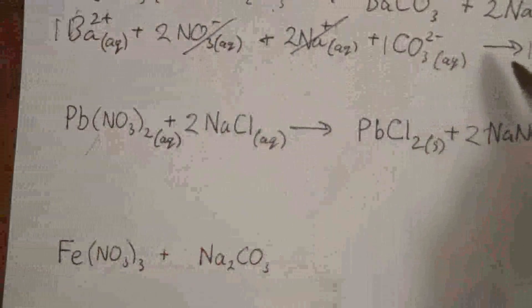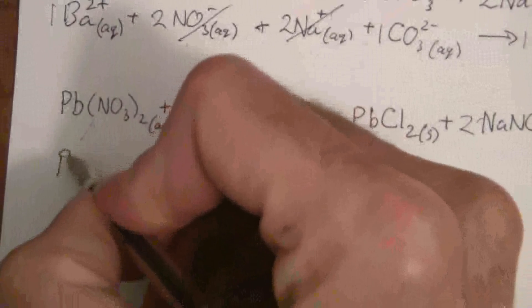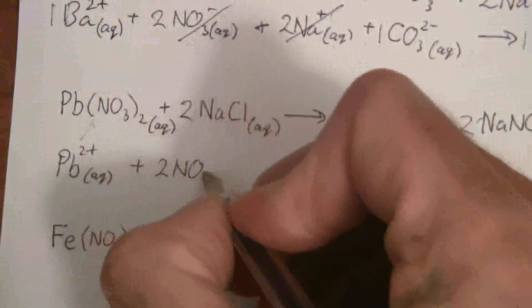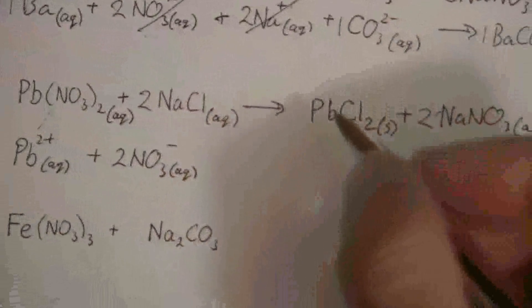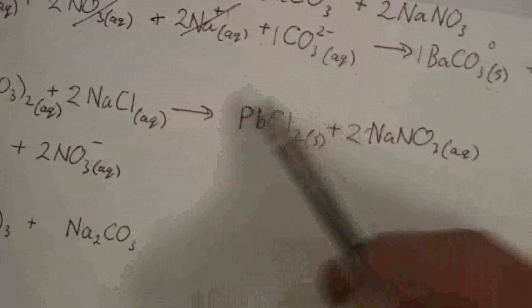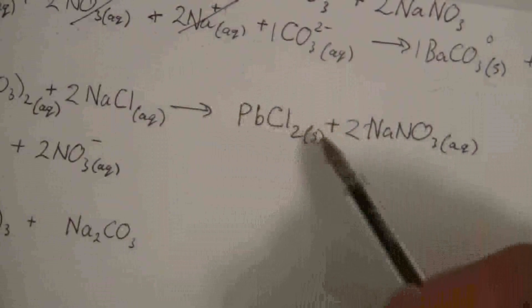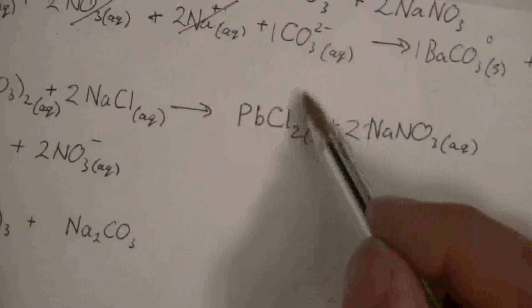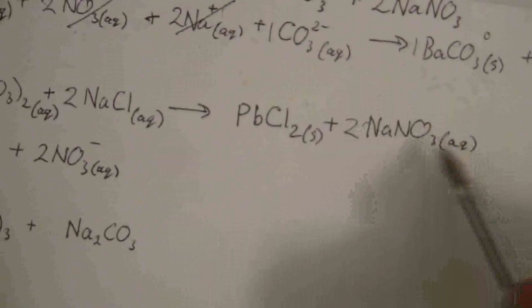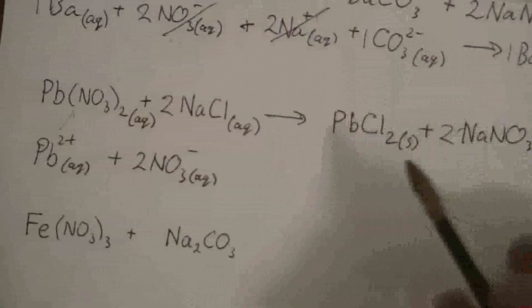When we write the complete ionic equation, we have the Pb²⁺ ions separated and aqueous, along with 2 nitrate ions. We have 2 sodium ions and 2 chloride ions. On the product side, just as we observe in our drops, the lead chloride is a solid compound so it remains together and has a zero charge. All the aqueous compounds are separated into their ions with aqueous subscripts and charges written in; the solid remains as-is.